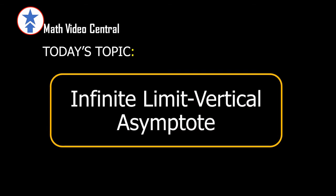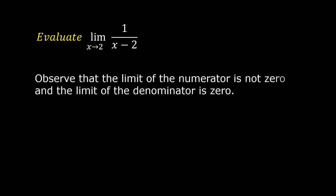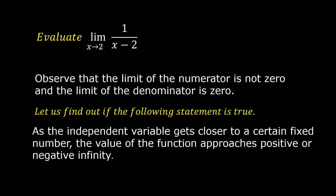Today's topic: Infinite Limits and Vertical Asymptotes. Evaluate the limit of 1 over x minus 2 as x approaches 2. Observe that the limit of the numerator is not 0 and the limit of the denominator is 0. Let us find out if the following statement is true: as the independent variable gets closer to a certain fixed number, the value of the function approaches positive or negative infinity.